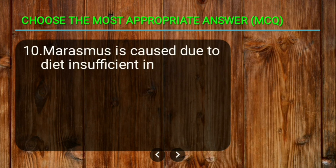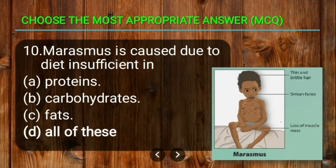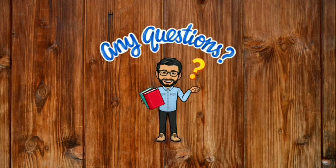Question ten: marasmus is caused due to — diet insufficient in proteins, carbohydrates, fats, or all of these. The correct answer is all of these, because generally when all kinds of nutrients are deficient, marasmus happens. So marasmus is caused due to deficiency of all these nutrients. The correct answer is D — all of these.